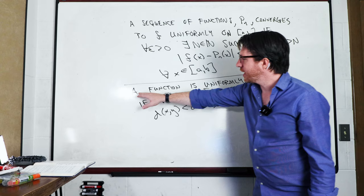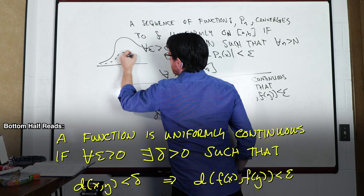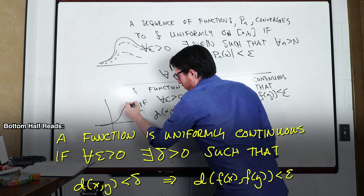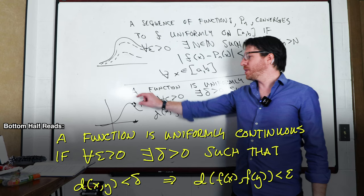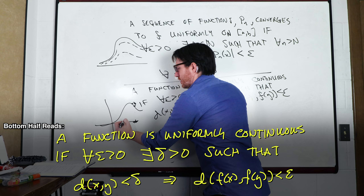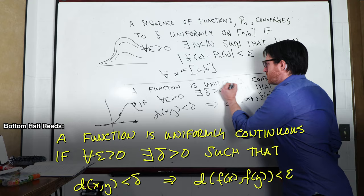A function is uniformly continuous when we can control how much wiggle there is in the output when you wiggle the input — and this works globally, not just locally at a particular point. For any epsilon greater than 0, there should be a delta such that if any two points are within delta of each other, the output difference is never more than epsilon. Crucially, that same delta works for all x and y in the domain, which is what gives us the uniformity.